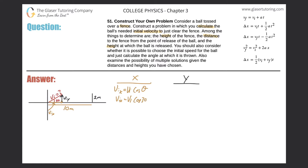Now let's do y. The initial velocity in the y direction equals the initial resultant velocity multiplied by sine of the angle. Therefore, with an angle of 30 degrees, we can just rewrite this and plug in the 30.